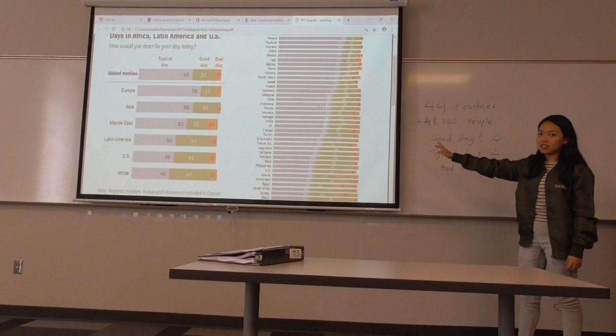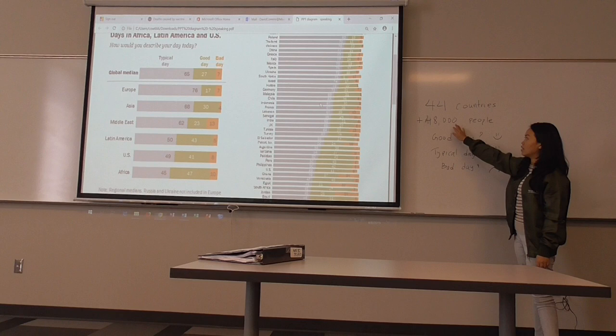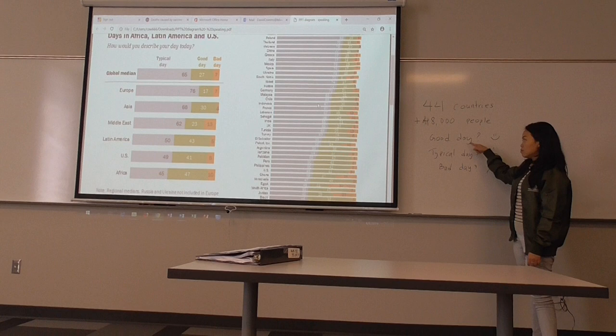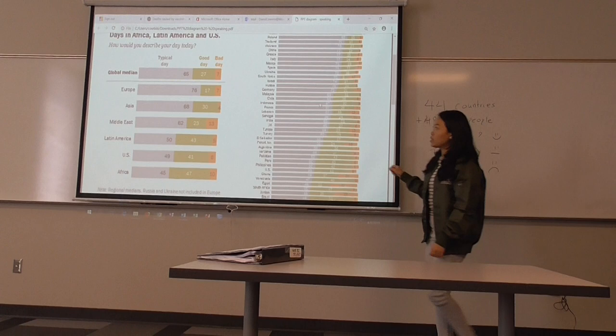This diagram shows the survey that has been conducted in 44 countries and 48,000 people took this survey. The questions that were asked were: do you have a good day, a typical day, or a bad day? If you can see the first diagram, this is the sum of all the continents, the people who took the survey.